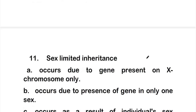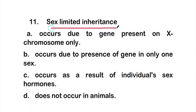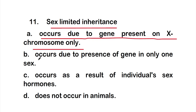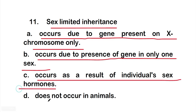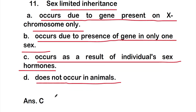Question eleven: sex-limited inheritance — option A: occurs due to genes present on X chromosomes only, option B: occurs due to presence of gene in only one sex, option C: occurs as a result of individual sex hormones, or option D: does not occur in animals. The right answer is option C — sex-limited inheritance occurs as a result of individual sex hormones.